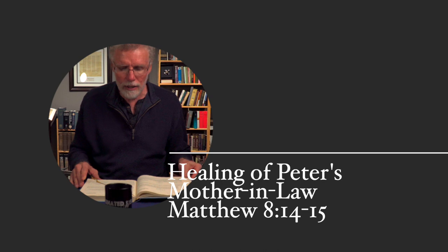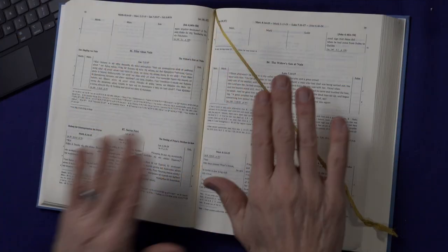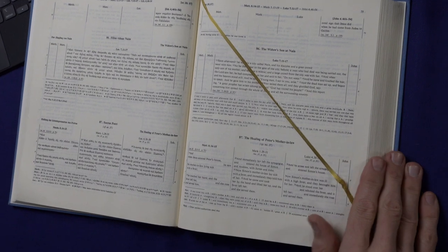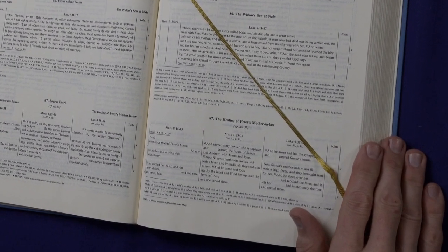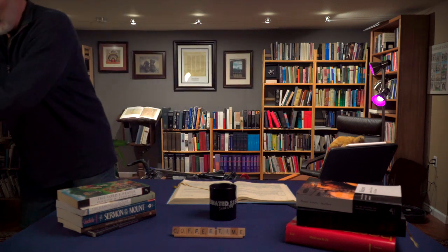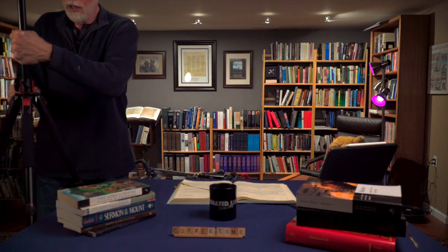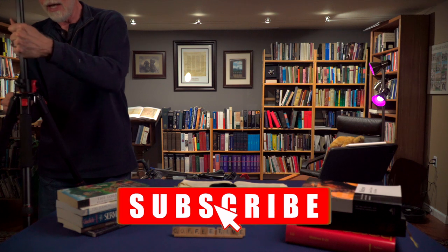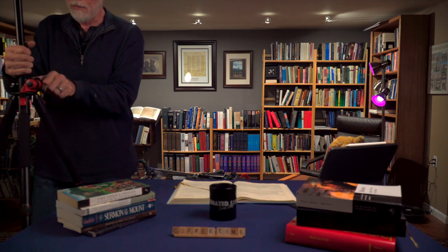The English text is the Revised Standard Version — mainly because they have access to that copyright. So let's turn and take a look at the healing of Peter's mother-in-law in Matthew 8. You can see that they don't just juxtapose the three accounts next to each other, but you can actually see word for word, phrase-by-phrase, how they are similar or different from one another.